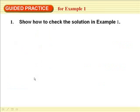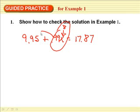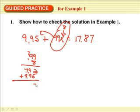Show how to check the solution in example one. So the answer was 8. So if we go back, it cost you $9.95 plus 99 cents per song had to equal $17.87. Well, to check it, we are saying that this is 8. So we put the 8 in and we still have to follow order of operations. We have to multiply this before we can add this. So 99 cents times 8 would be 2 carry the $7.92 plus the $9.95. Let's see if it comes out to be $17.87.